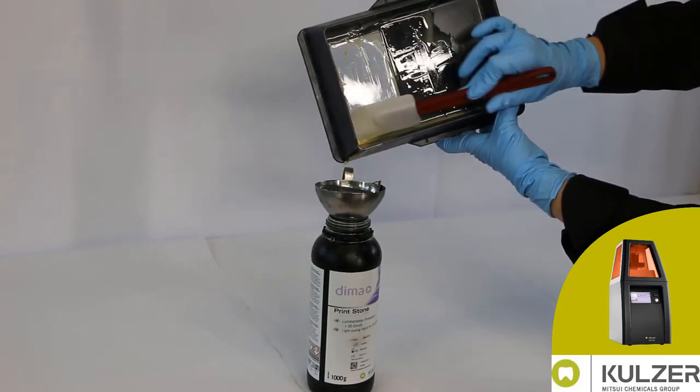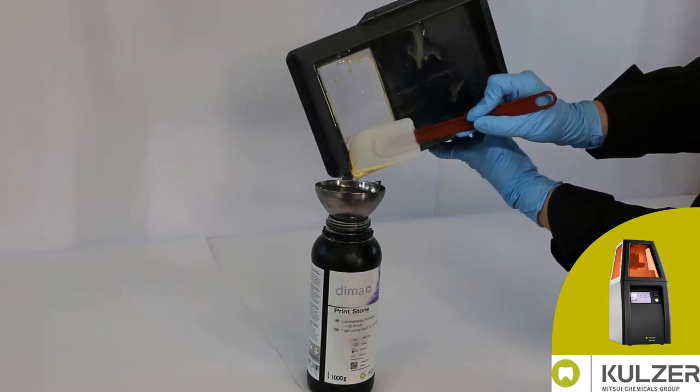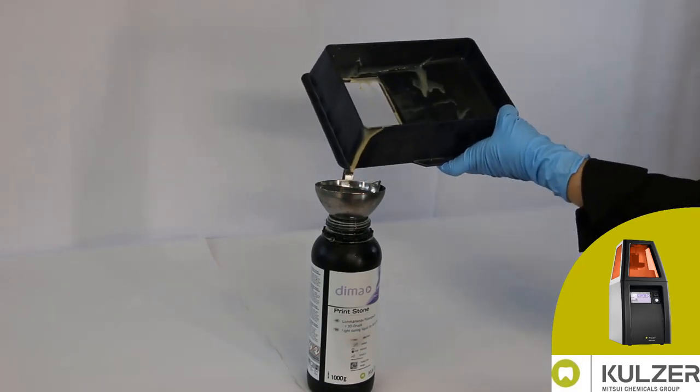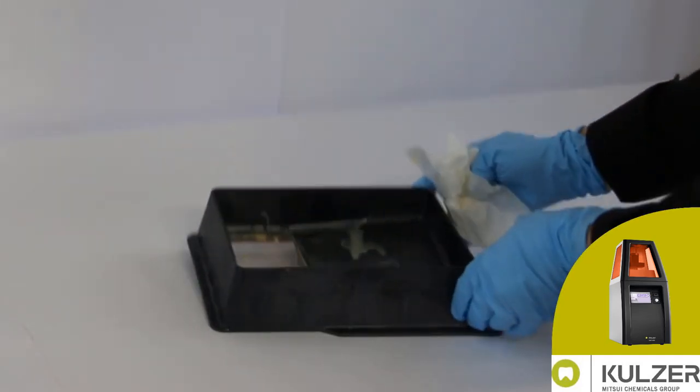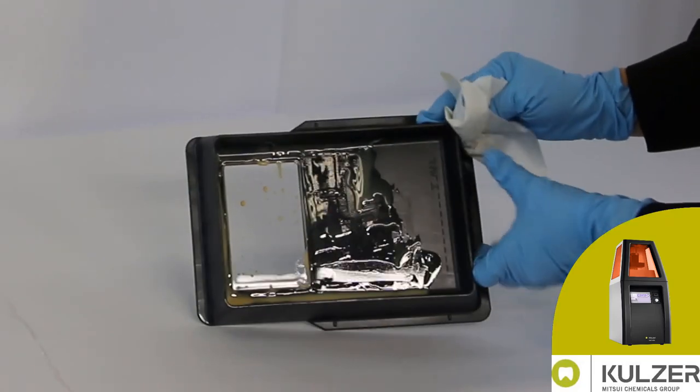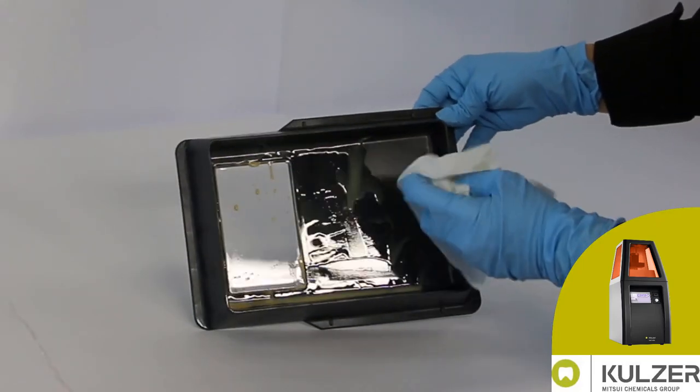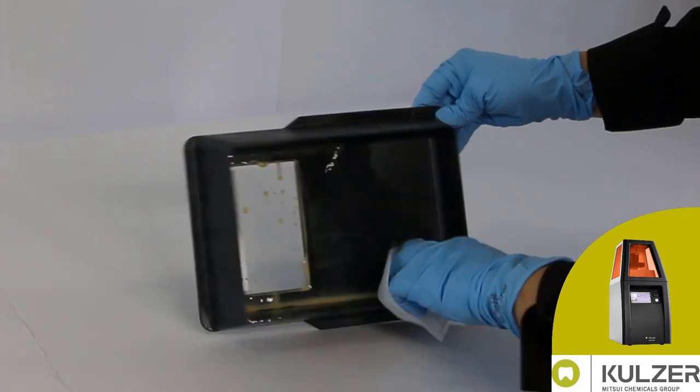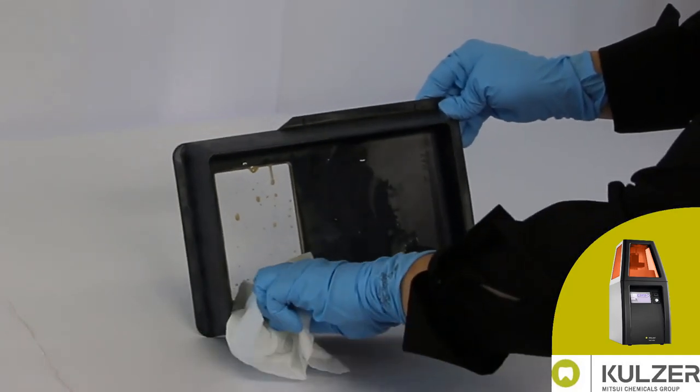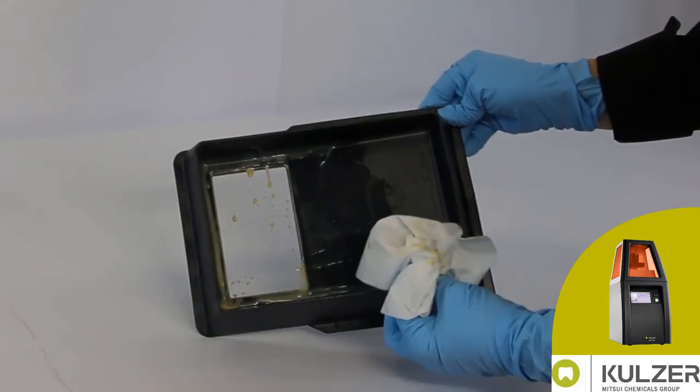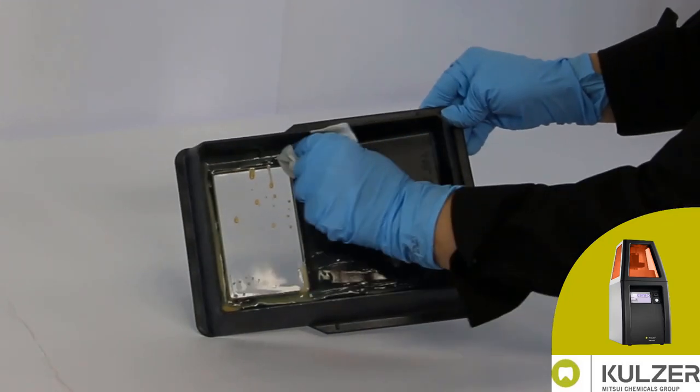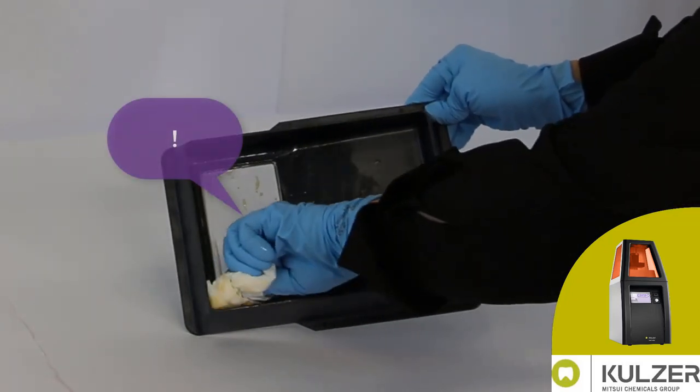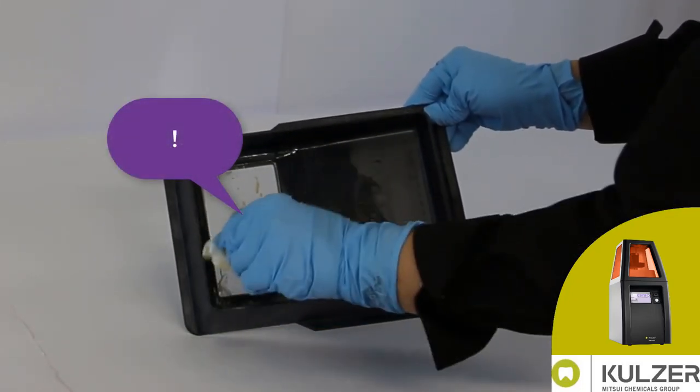In this way, you avoid disposing of more material than is necessary. After as much material as possible has been filled back into the bottle, the residues from the blackened and sensitive part of the resin tray can be removed with a wood-free paper towel. Be careful not to touch the projector window with the sensitive foil.